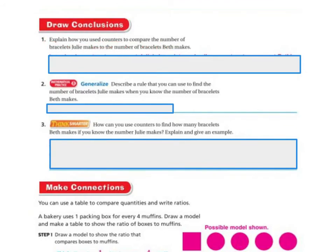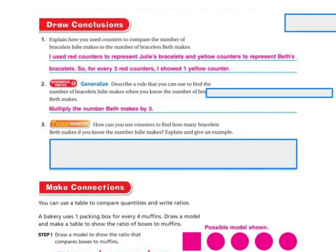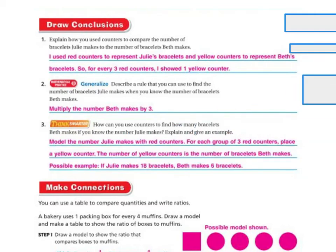Explain how you use counters to compare the numbers of bracelets Julia makes to the number Beth makes. I'd use the red counters to represent Julia's bracelets and the yellow counters to represent Beth's bracelets, so for every 3 red counters I would show 1 yellow counter. Generalize: describe a rule to find the number of bracelets Julia makes when you know the number Beth makes — multiply the number Beth makes by 3. Think Smarter: how can you use counters to find how many bracelets Beth makes if you know the number Julia makes? Model Julia's bracelets with red counters; for each group of 3 red counters, place 1 yellow counter. The number of yellow counters is the number of bracelets Beth makes. For example, if Julia makes 18 bracelets, then Beth makes 6 bracelets.